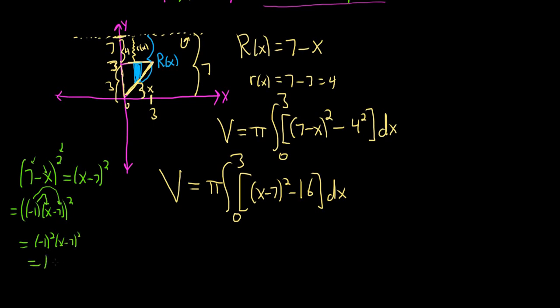So it checks, right? So all day long, you can switch those as long as your exponent is even. So it just made it easier for me to multiply it out. So pi integral of 0 to 3.